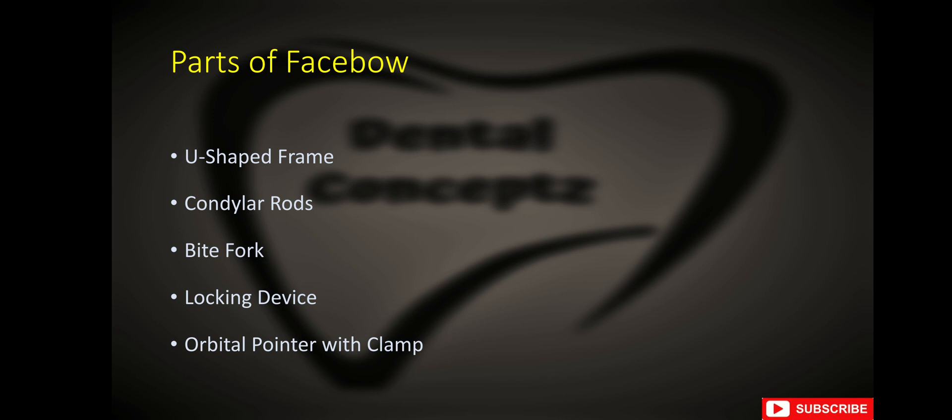What are the different parts of face bow? A face bow has a U-shaped frame, condylar rods, whip fog, locking device, and orbital pointer with clamp.